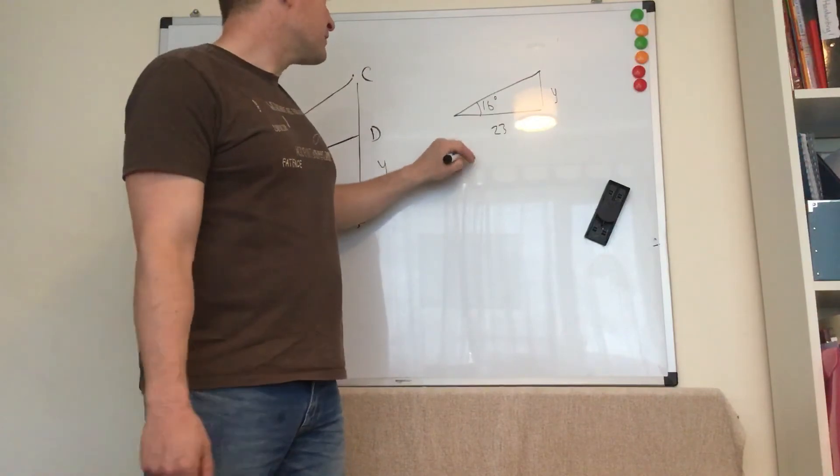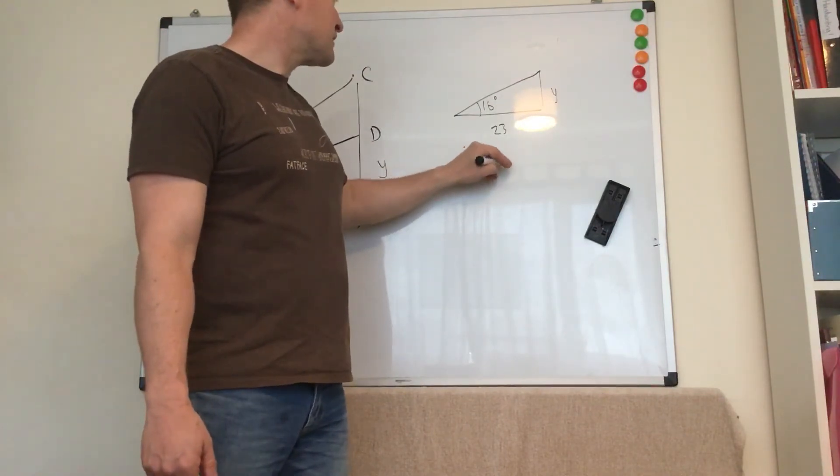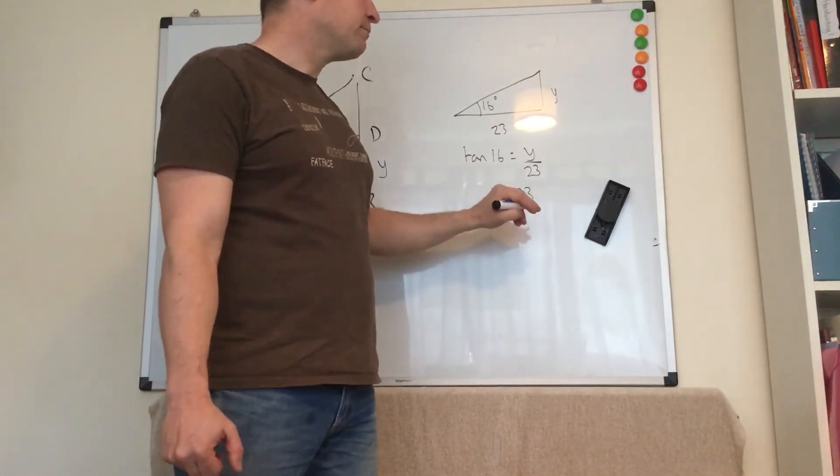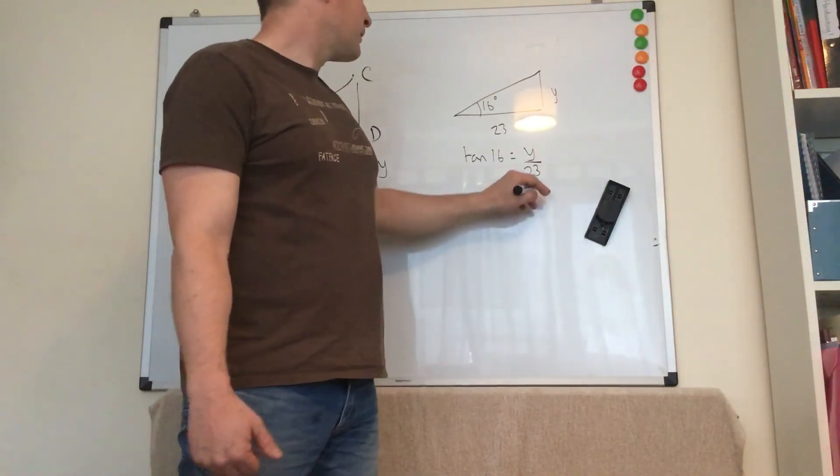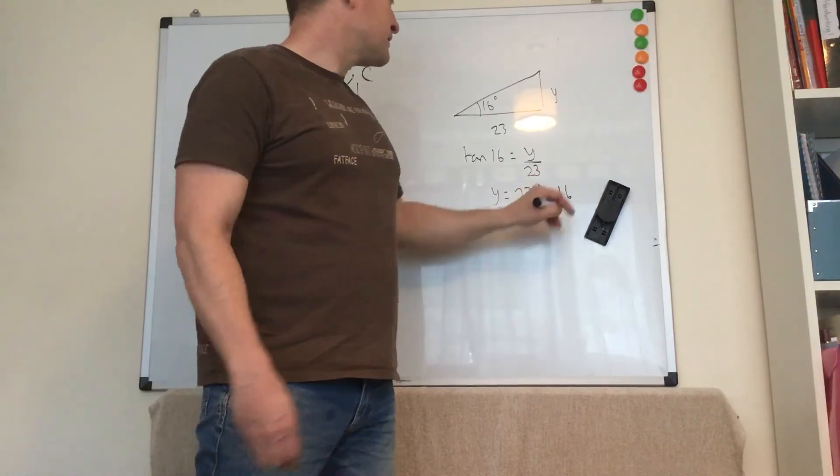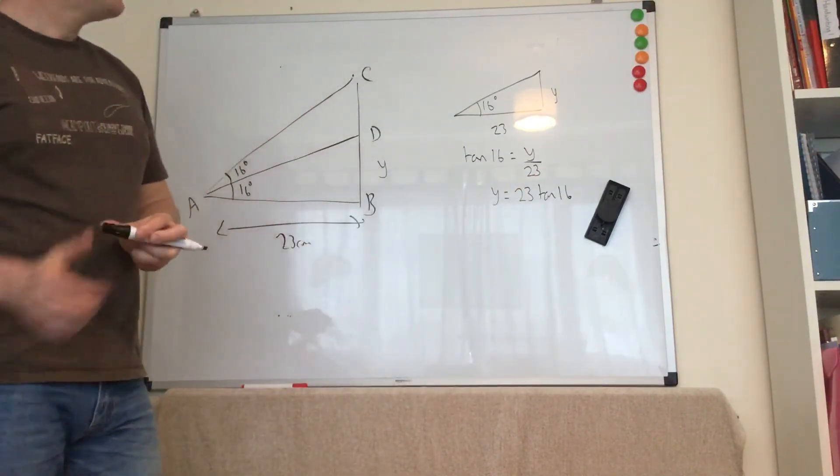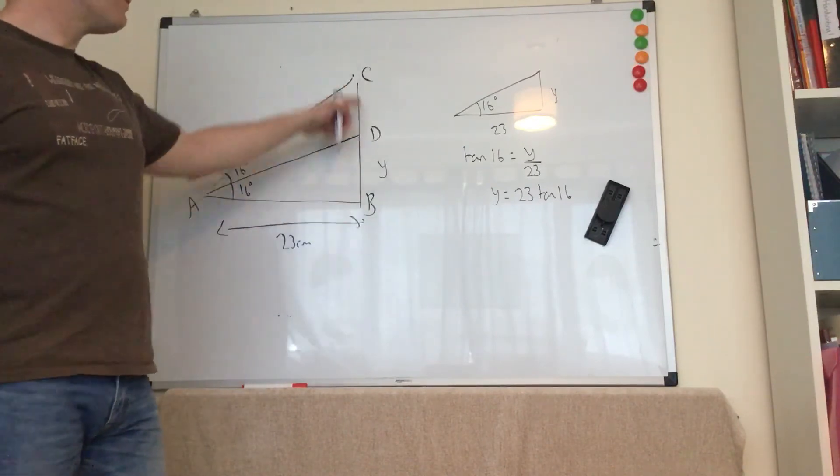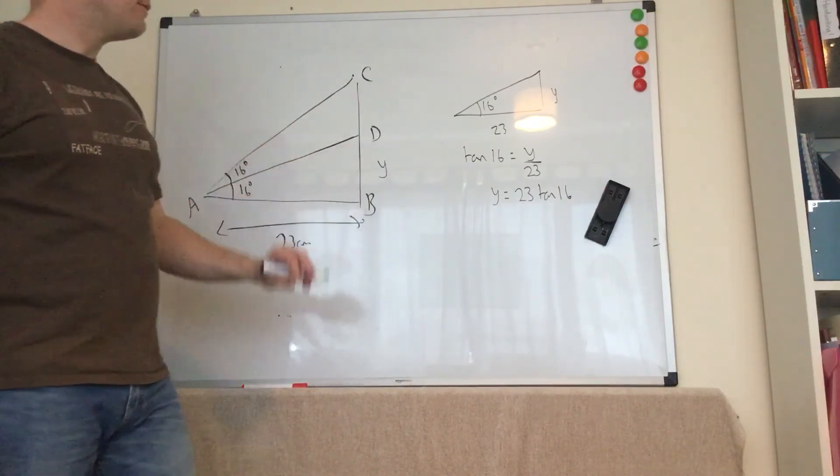Okay, so we're dealing with tan. So we get tan 16 equals y over 23. So y equals 23 tan 16. Okay, I can't be bothered to work that out because I'm just going to take it away from something in a minute, so I'm going to leave it like that.